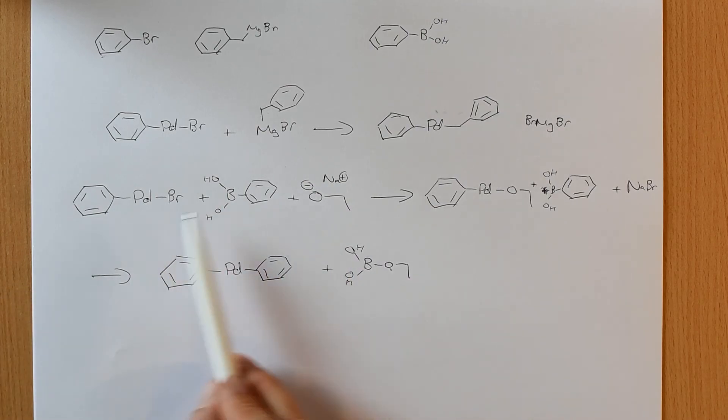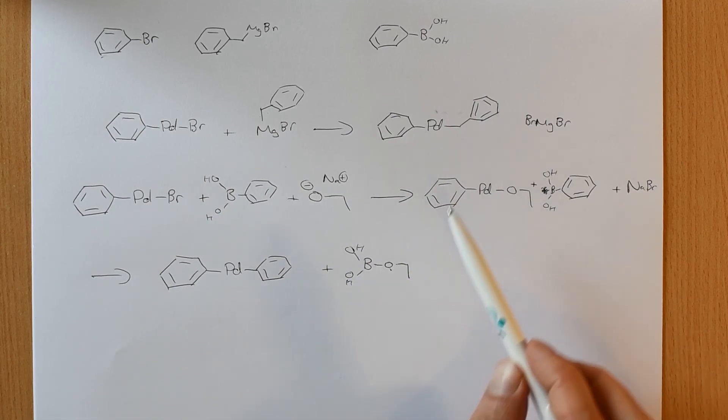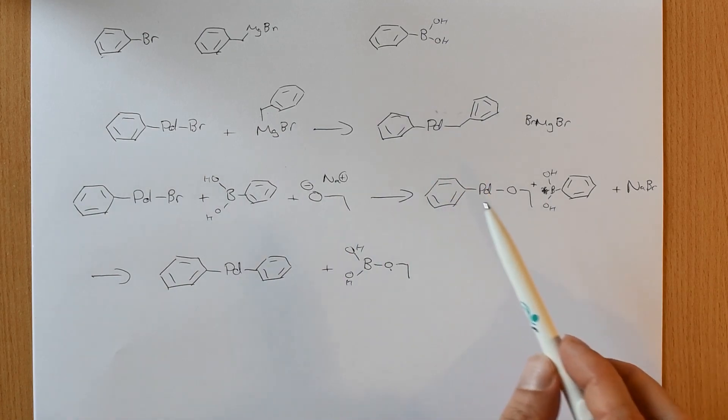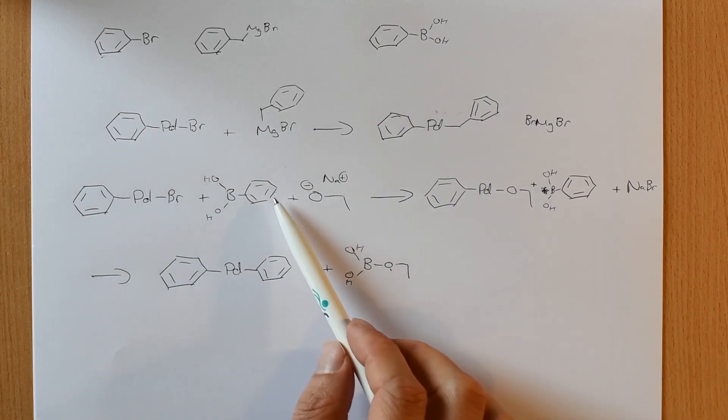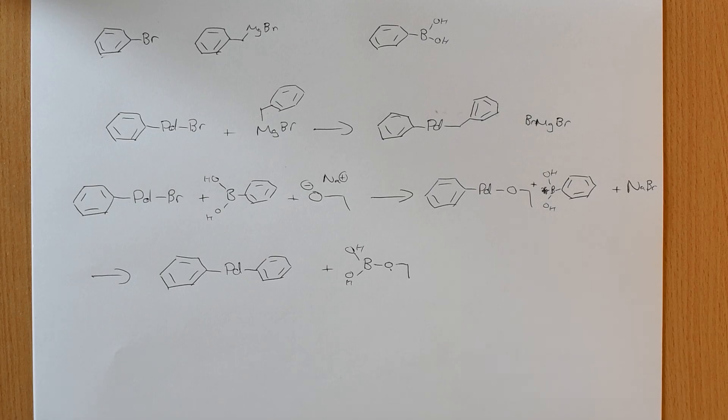So the transmetallation step is always going to follow a similar pattern. But in some cases, you also need a base. So it has to happen in two steps rather than just in one step. There's other cases in the Hiyama coupling where you need to add in fluoride or something like that to promote departure of the silicon. So it just depends on your particular coupling partners. And for a particular reaction, you just have to look it up. But it's always following this similar transmetallation.